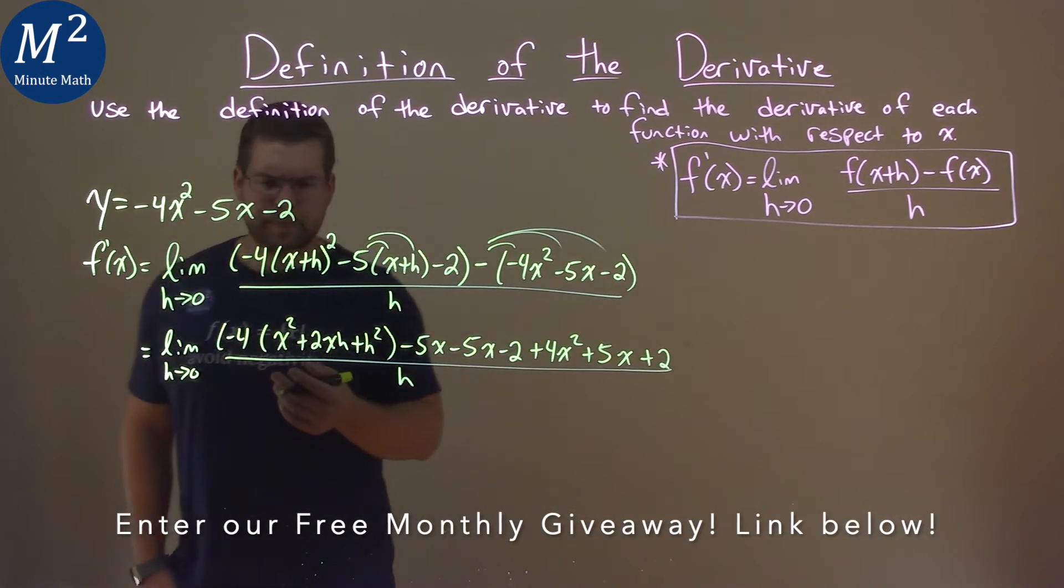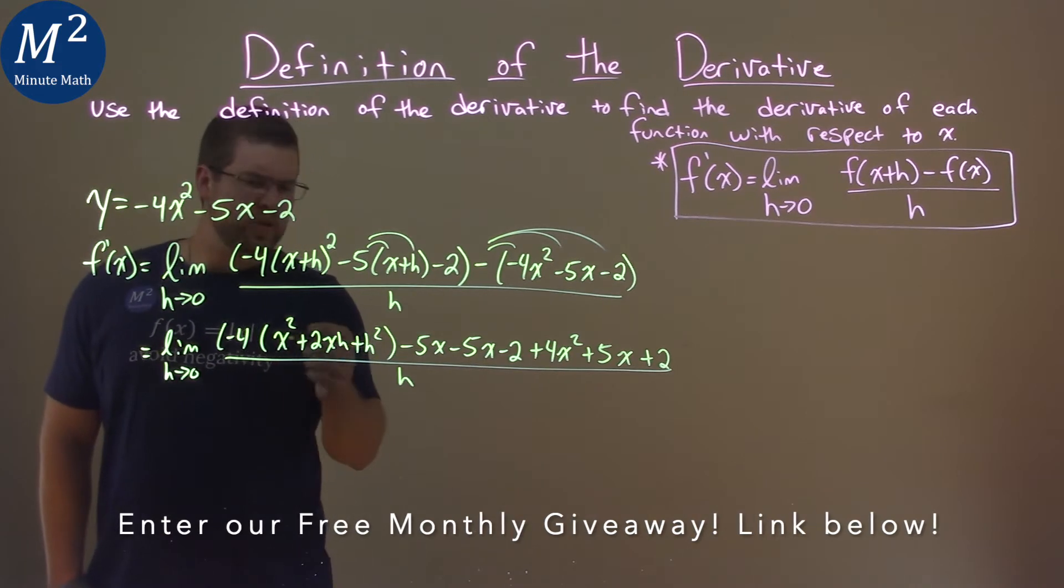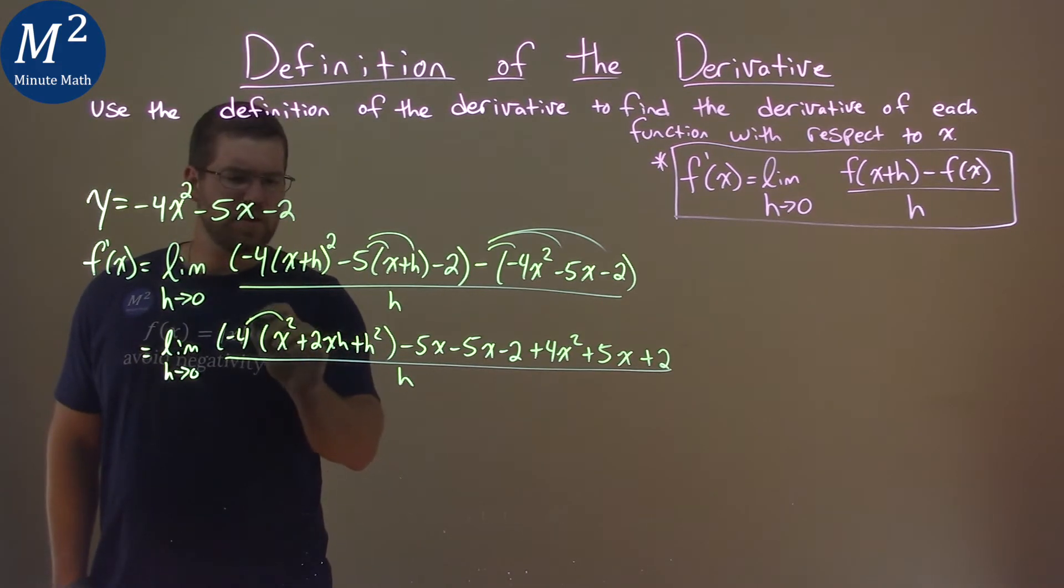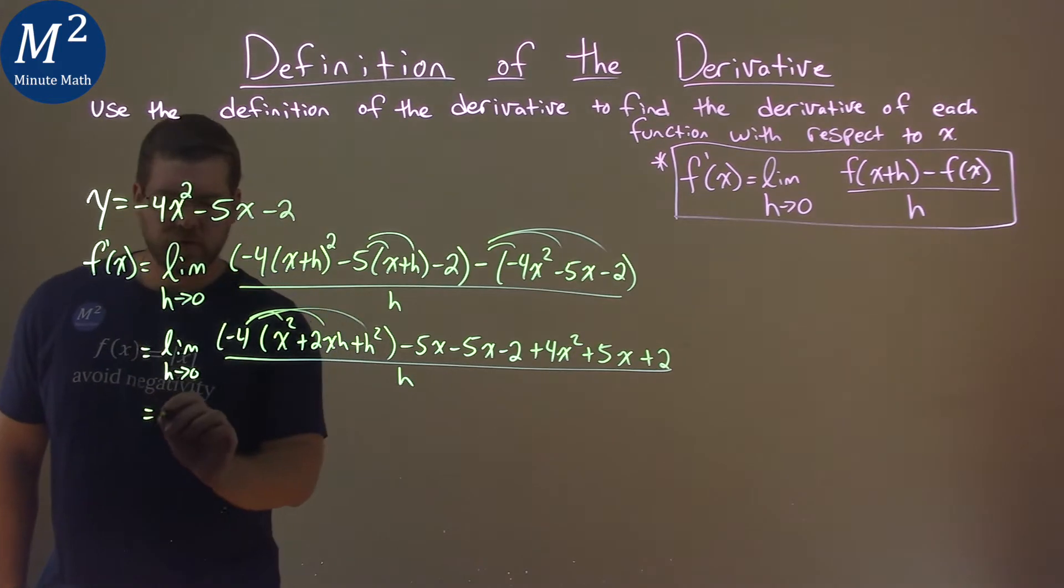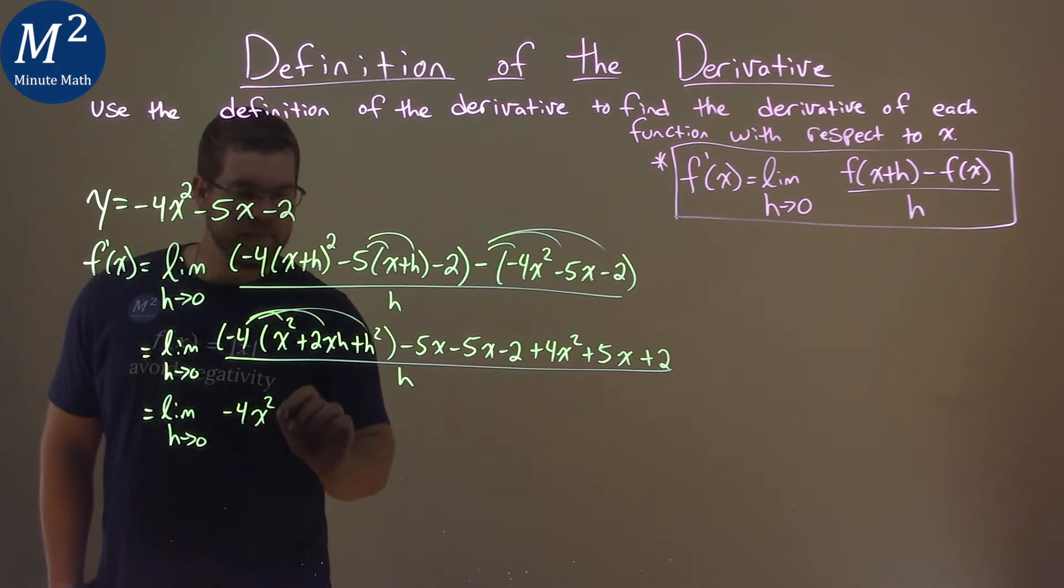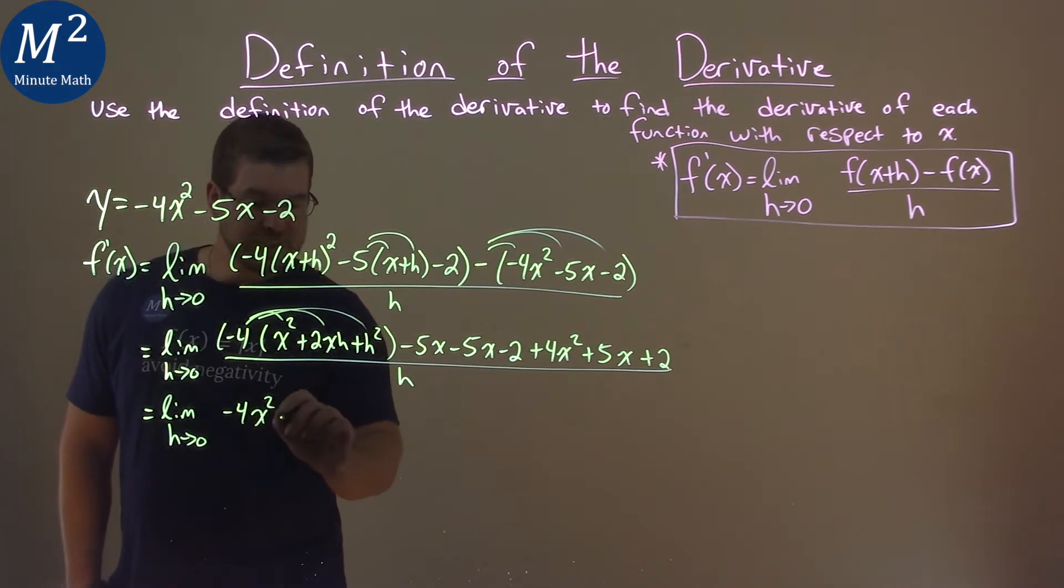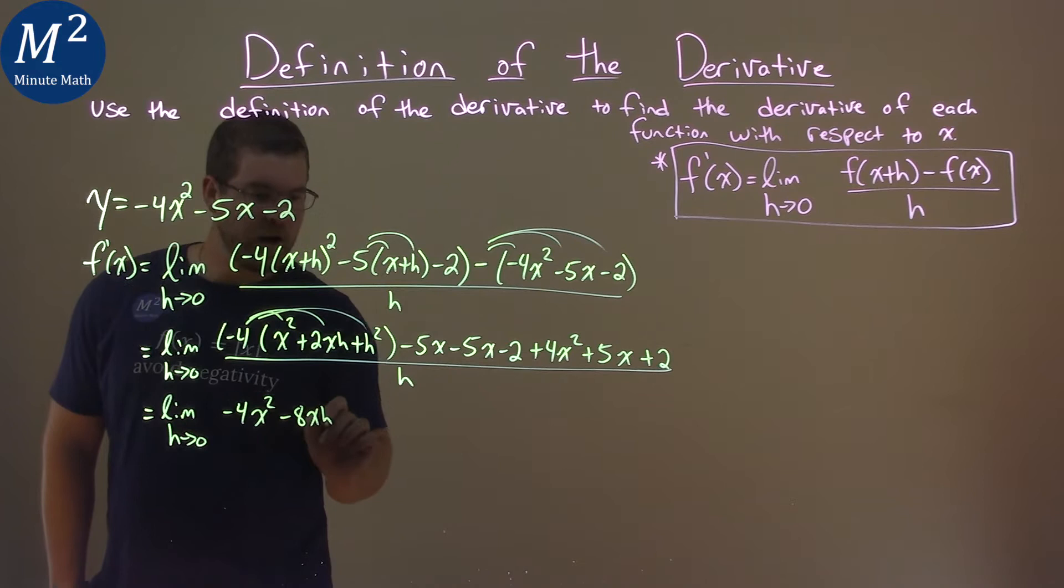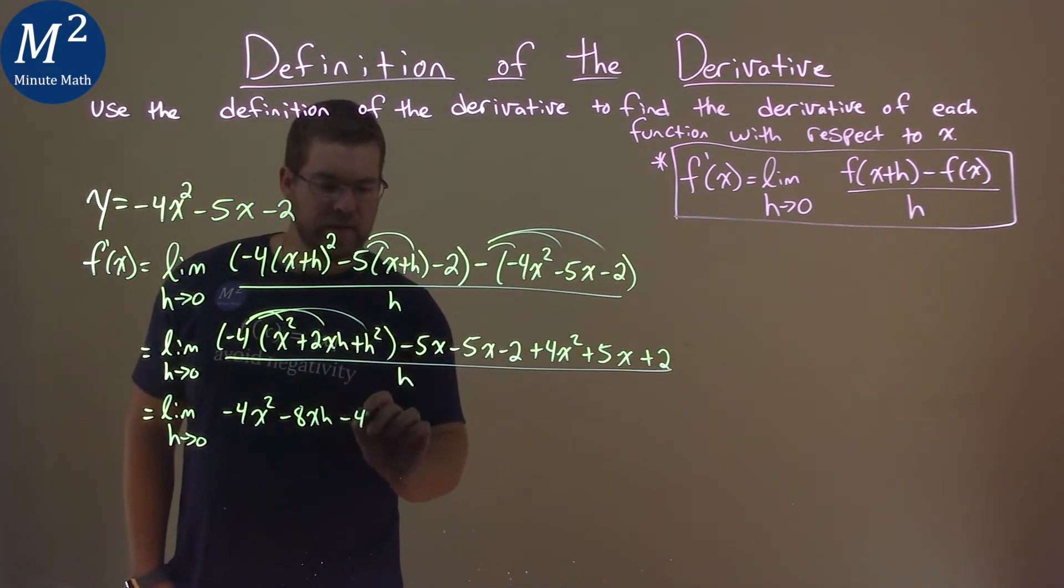All this busy work here. Now, the last thing I have to distribute in the numerator is just this negative 4 across right there. So let's, again, take the limit as h approaches 0 of negative 4x squared. Negative 4 times 2 is negative 8xh, and then negative 4h squared here.